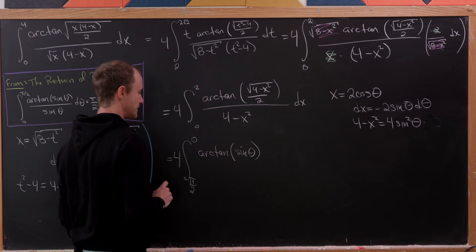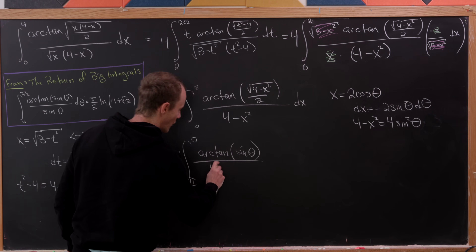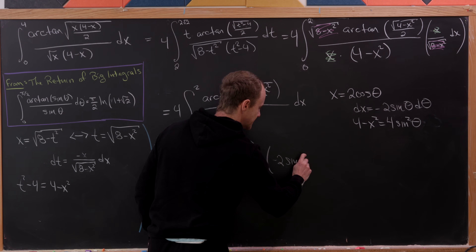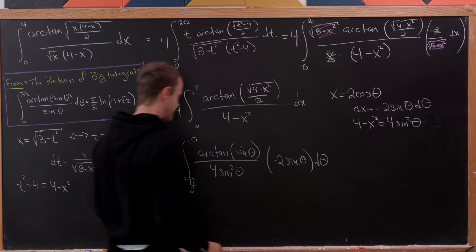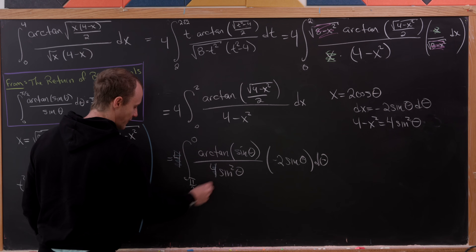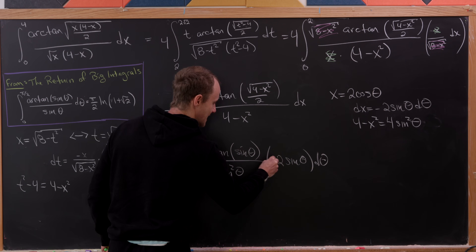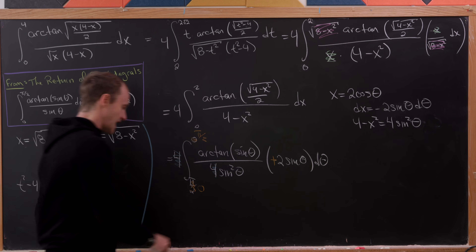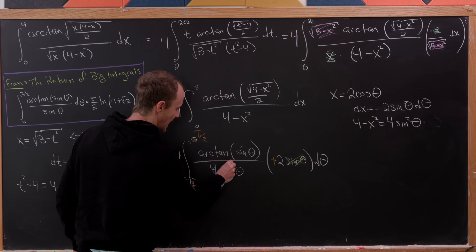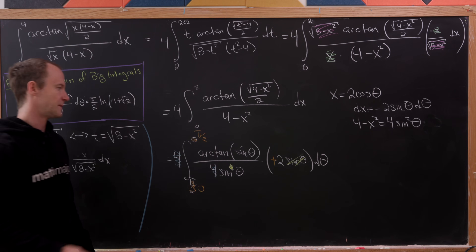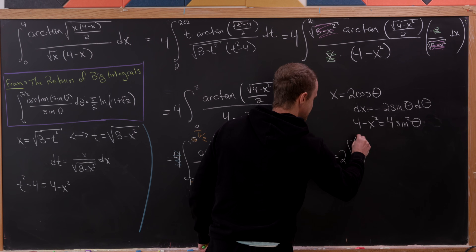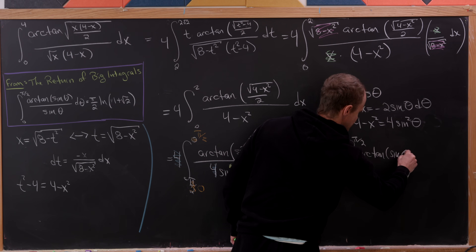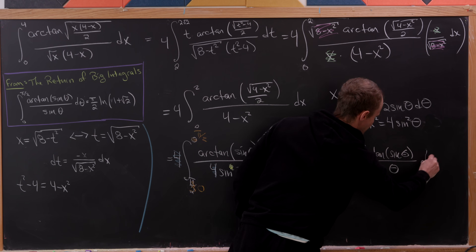After substitution, the arctan argument simplifies to sinθ. The denominator is 4sin²θ and the dx term is −2sinθ dθ. The fours cancel, and flipping the bounds removes the minus sign, leaving one power of sine canceling to give the integral from zero to π/2 of arctan(sinθ)/sinθ dθ, multiplied by two.